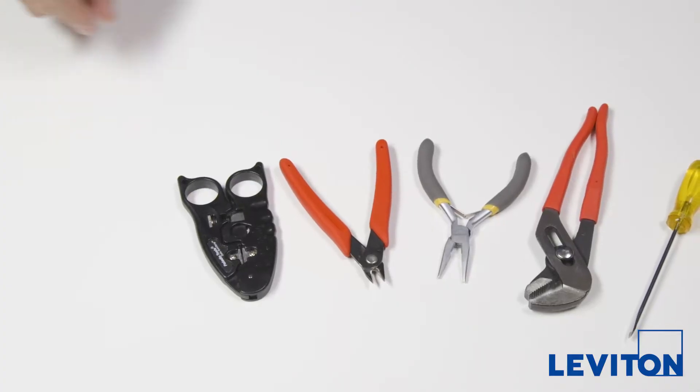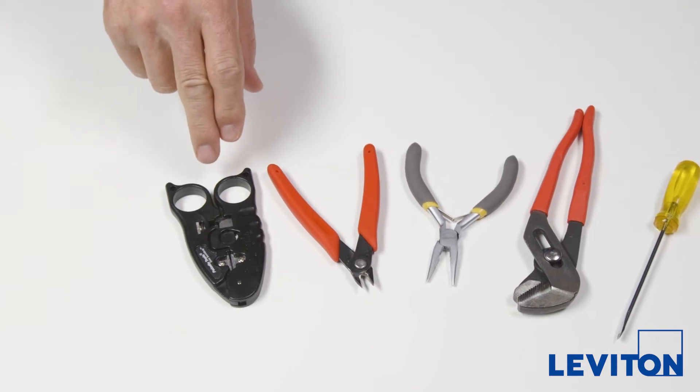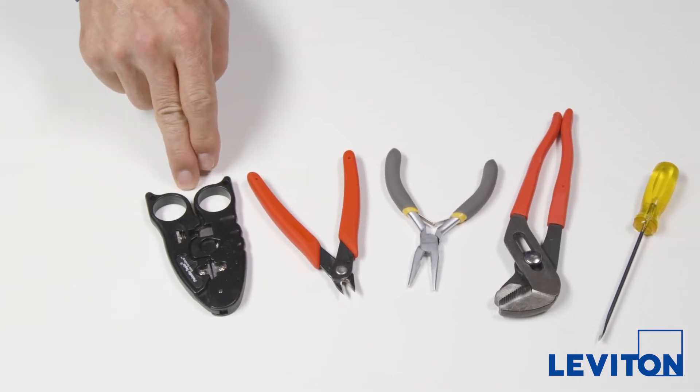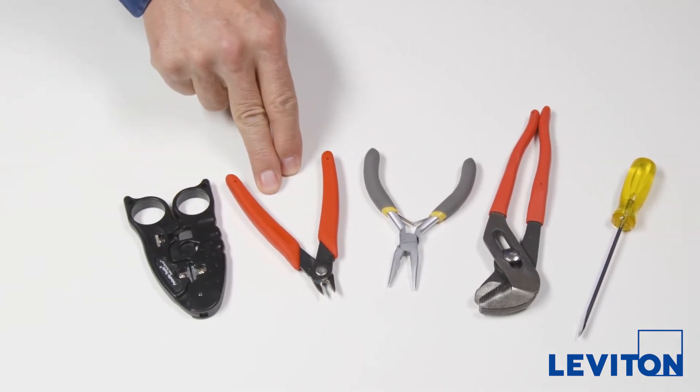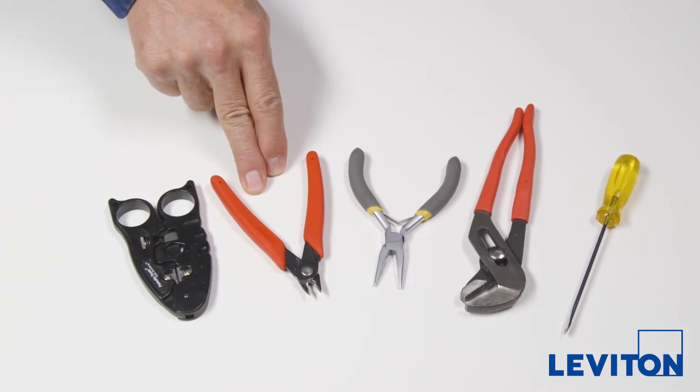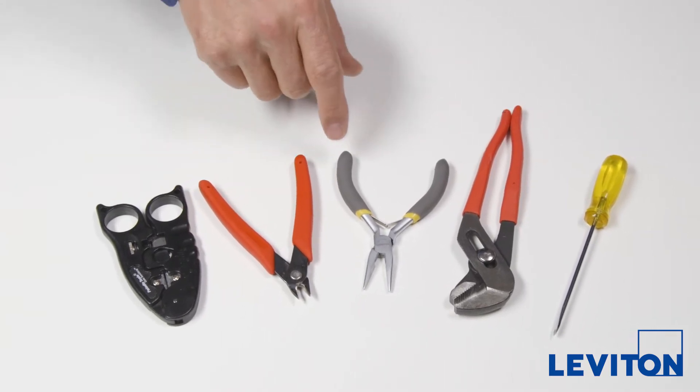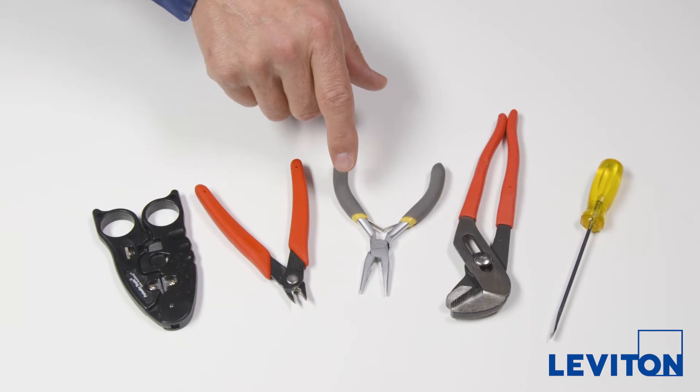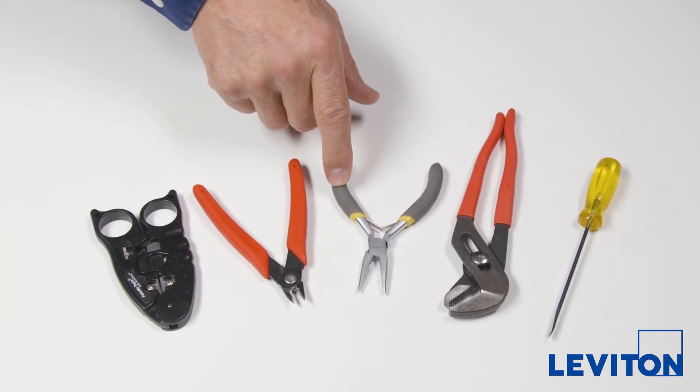To prepare the wires for termination we'll use the following tools: a data wire strip tool and a flush cutter. Additional tools you may find useful are needle nose pliers, channel lock pliers, and a small flat blade screwdriver.